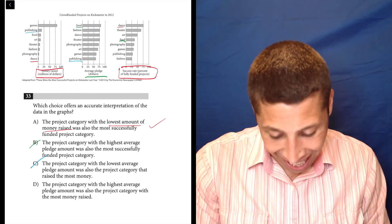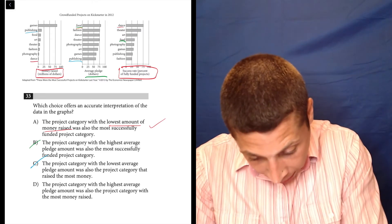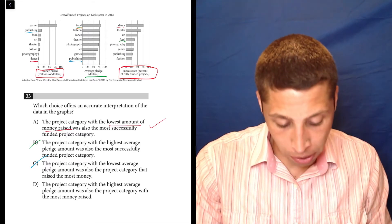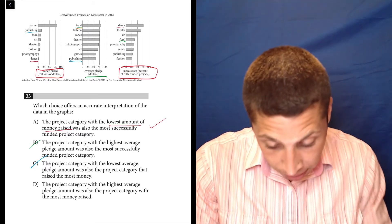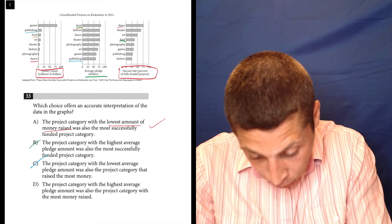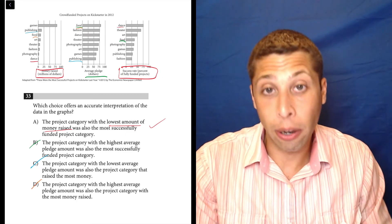And D, the project category with the highest average pledge amount, so again that's food, was also the project category with the most money raised, and most money raised is not food. Food is third. So there you go. And that's it.